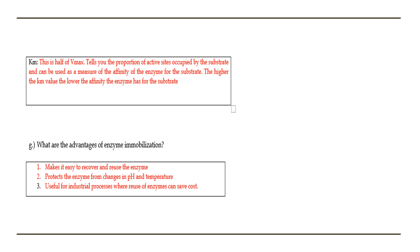Km is typically half of Vmax, and it tells you the proportion of active sites of the enzymes that have been occupied by the substrate. What Km is basically telling you is the level of affinity between the substrate and the enzyme. The higher your Km value, the more substrate you need for the enzyme to bind, which tells you that the enzyme has a low affinity for the substrate. The advantages of enzyme immobilisation are: they're easy to recover and reuse the enzyme; it protects the enzyme from changes in pH and temperature; and obviously in industrial processes, reusing the enzyme can be cost effective.